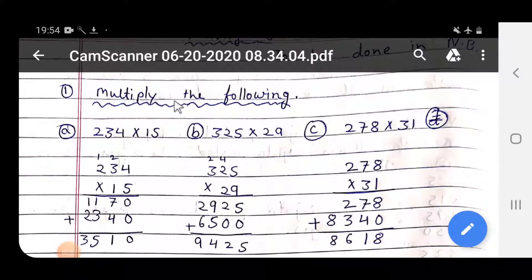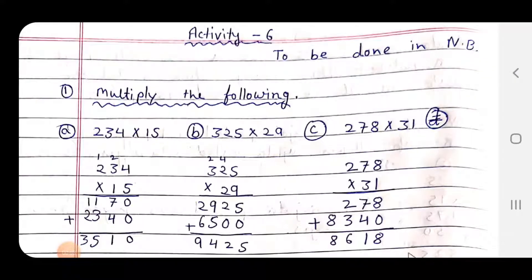Activity 6. Multiply the following. Now, option number A: 234 x 15.